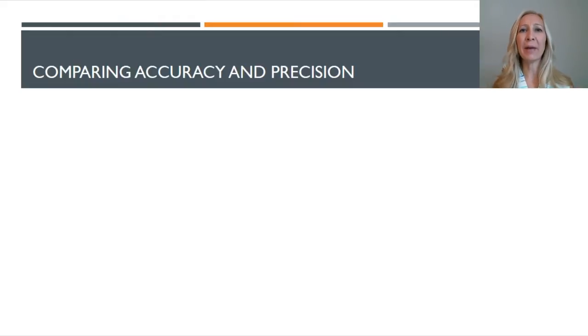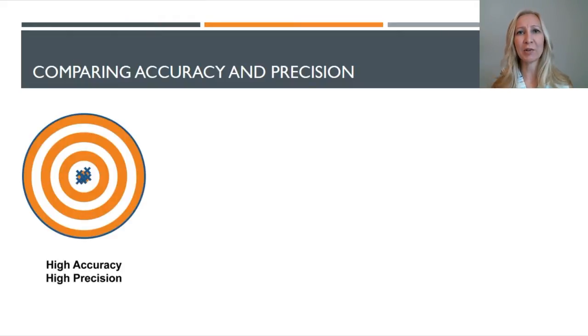One way to look at this and compare the difference between accuracy and precision, because often they get used interchangeably but they do mean two different things, is think of a bullseye or a target. Now in a target, if you're shooting an arrow, you want to achieve the bullseye. And a scientist wants to get accurate results, so that bullseye represents accuracy.